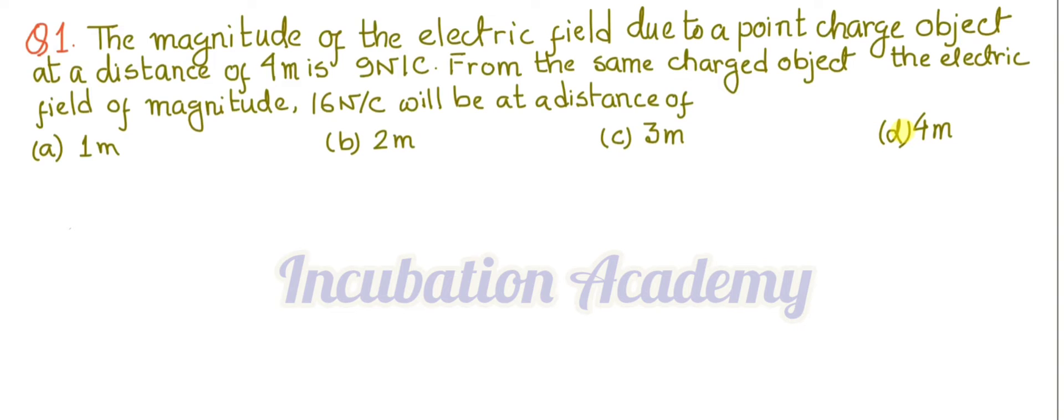Let us recapitulate what we have learned about electric field. Let's say this is the charge Q and if we want to find the electric field at point P, at a distance R from the source charge, the electric field at the field point P is E equal to Q divided by 4 pi epsilon 0 R square.